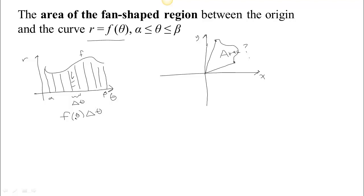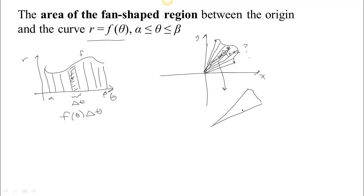We make the partition finer and finer and that sum becomes an integral. If you think about partitioning theta over here in the polar setting, you're breaking the region up into several little changes in angles — so you're really breaking it up into little wedges. What you're really doing is adding up these little wedges. Let's look at one wedge in detail.